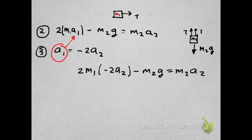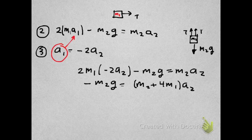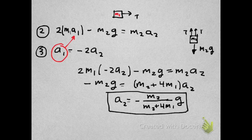So we get in equation 2: 2M1 times A1, but A1 is minus 2A2. The second term is minus M2G. It should be equal to M2A2. So now we have our equation only in terms of A2. Solving for A2 gives us finally that the acceleration of block 2 is minus M2 divided by M2 plus 4M1 times G.